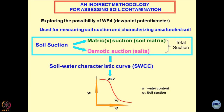This technique was developed by one of my PhD scholars, Dr. Srideep, who is now a professor at IIT Guwahati. In 2003-04, it was the first time in the country that the WP4 equipment — what we call a dew point potentiometer — was used. The dew point refers to moisture or water vapors condensing on a surface. The potentiometer measures the volume of vapors condensing on a surface. WP4 is normally used for developing suction versus moisture content characteristics of geomaterials.